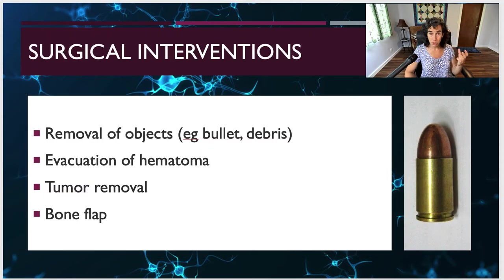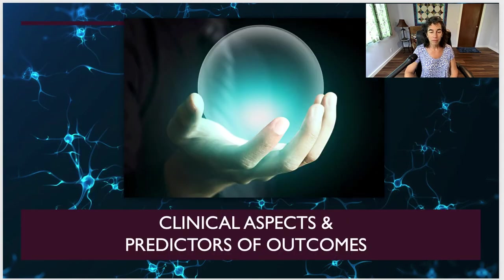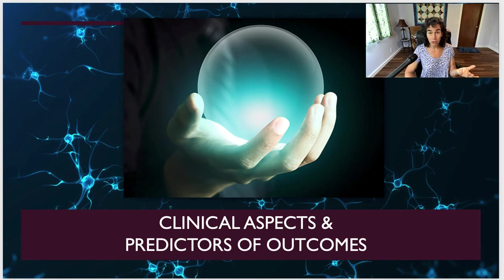In addition to those protocols, we also have surgical interventions: the removal of objects like bullets or debris from the wound, evacuation of a hematoma or blood clot, removal of a tumor if that was the cause of the brain injury, and ensuring that the remaining bone is in good shape. Next, we're going to talk about clinical aspects and predictors of outcomes. It can be very difficult to predict what's going to happen to somebody who has had a traumatic brain injury and how recovery is going to go.